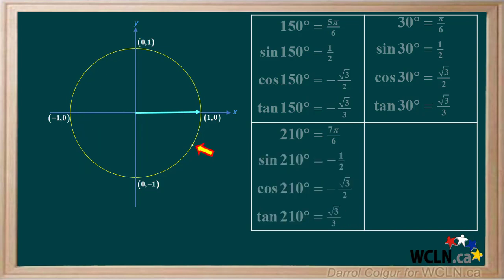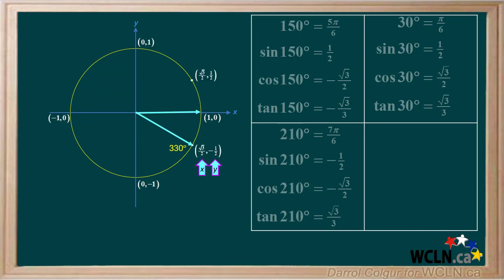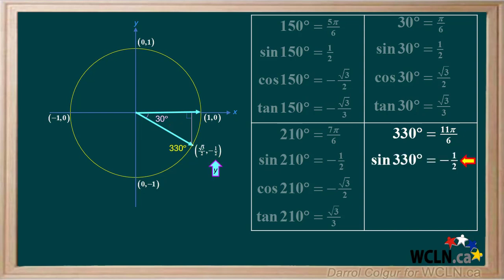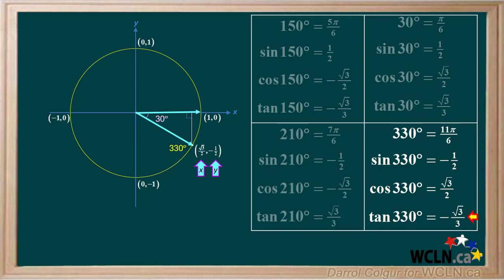We'll add a mark in quadrant 4, which corresponds to a principal angle of 330 degrees. We'll add an arrow to show the terminal arm. The coordinates for this point are positive root 3 over 2 for X and negative 1 half for Y. 330 degrees is equal to 11 pi over 6 radians. We'll draw in a right triangle, and the reference angle for 330 degrees is 30 degrees. The sine is Y over R, which is negative 1 half. The cosine is X over R, which is positive root 3 over 2. The tangent is Y over X, which is negative 1 half divided by positive root 3 over 2, working out to negative root 3 over 3. Notice the cosine is positive while the sine and tangent are both negative. This is true for any angle in quadrant 4.